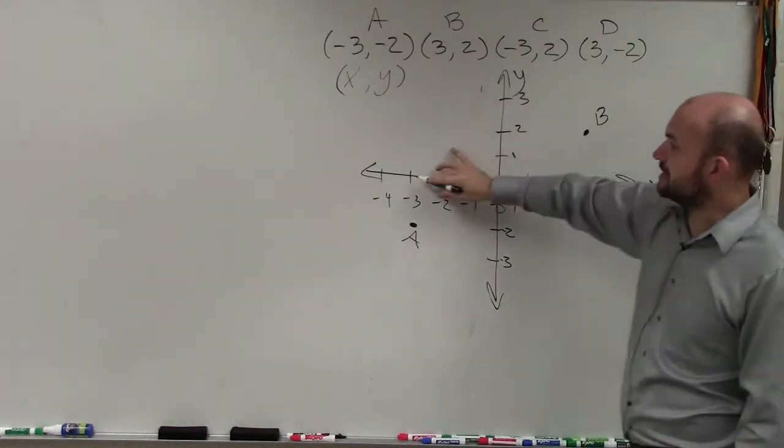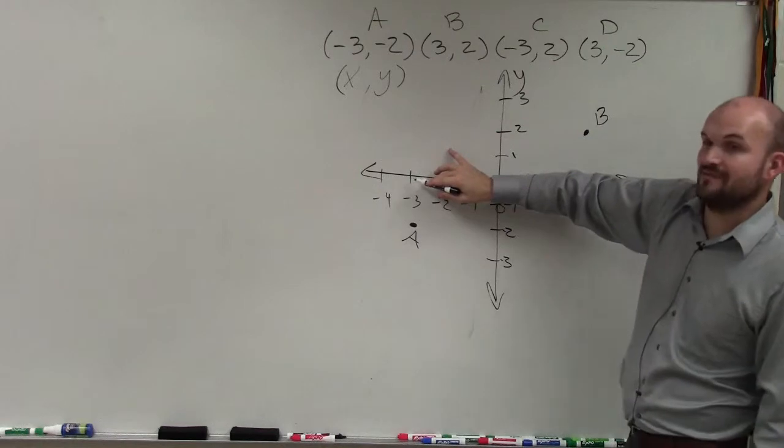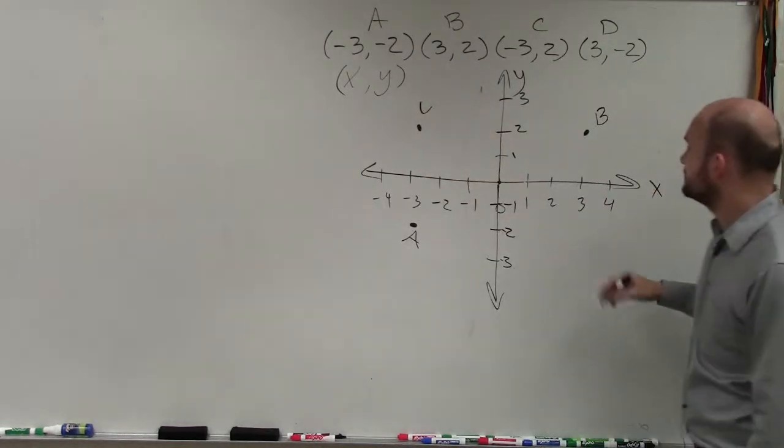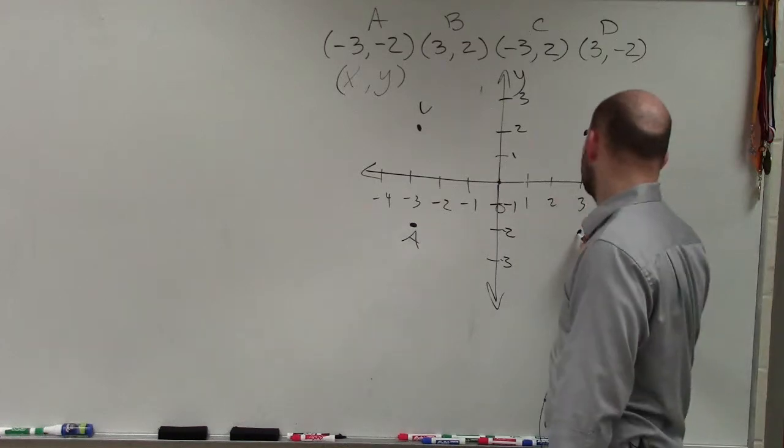For C, the x-value is negative 3 like A, but now the y-value is positive 2, so I'll go up 2. And then for D, I have positive 3, negative 2.